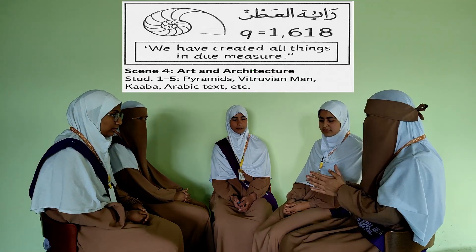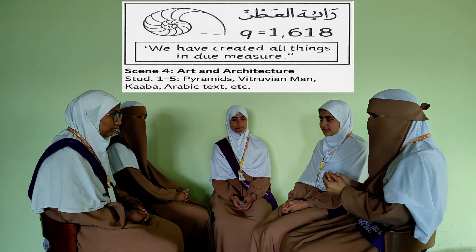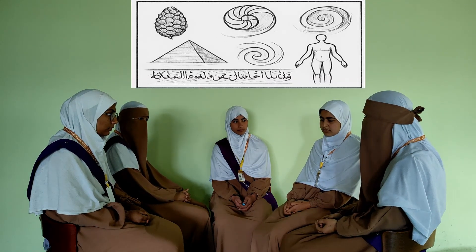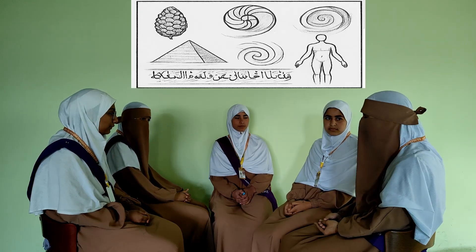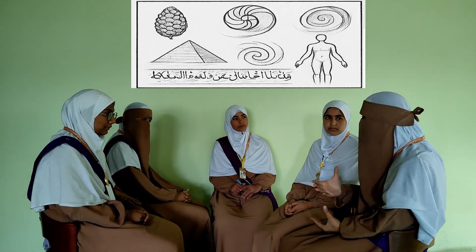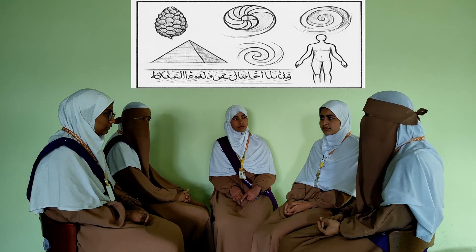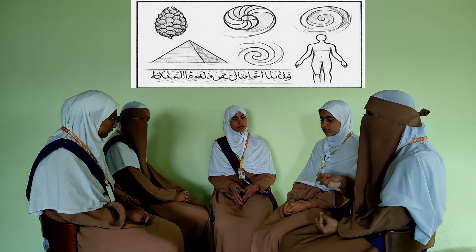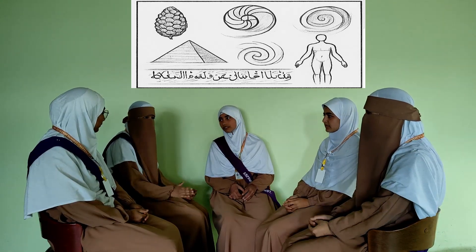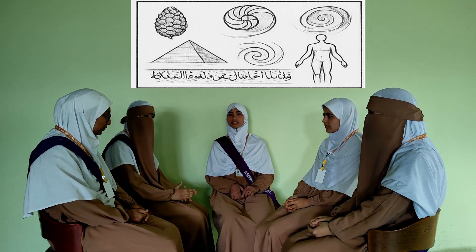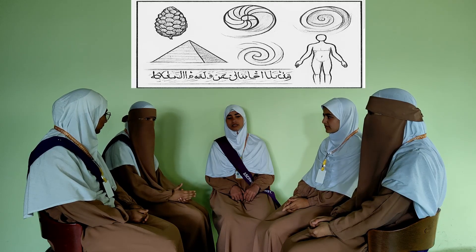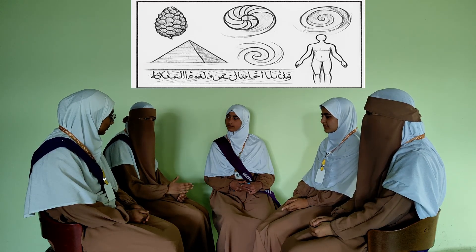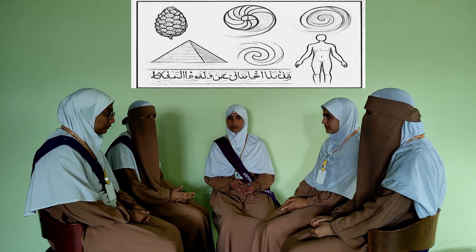Sister Basma, let me answer your question. The Fibonacci sequence and the golden ratio appear everywhere in nature. Have you ever looked at a pine cone or a sunflower head? If you count the spirals in one direction and then the other, they almost always follow the Fibonacci sequence — like 34 spirals in one direction and 55 in the other. And it's not just plants. Look at the nautilus shell — it forms a logarithmic spiral that grows in perfect proportion, following the golden ratio. Even hurricanes and galaxies form similar spirals.